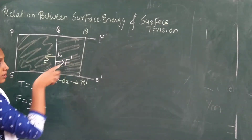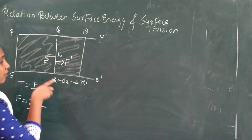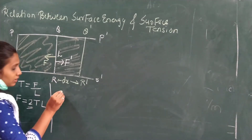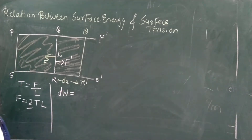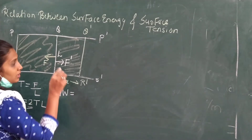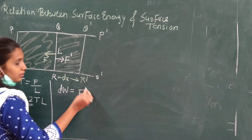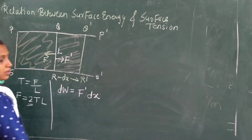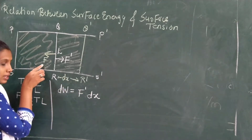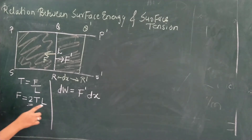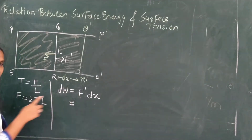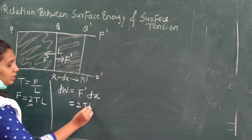As I move the frame by force F dash through a small displacement dX, I need to do some work. The small work done dW = F dash × dX. Since the magnitude of F dash equals F = 2TL, we get dW = 2TL × dX. Taking T aside, we have T × 2L dX. Now, L × dX gives the increase in surface area, and 2L dX accounts for both surfaces (front and back), giving the total increase in surface area dA.